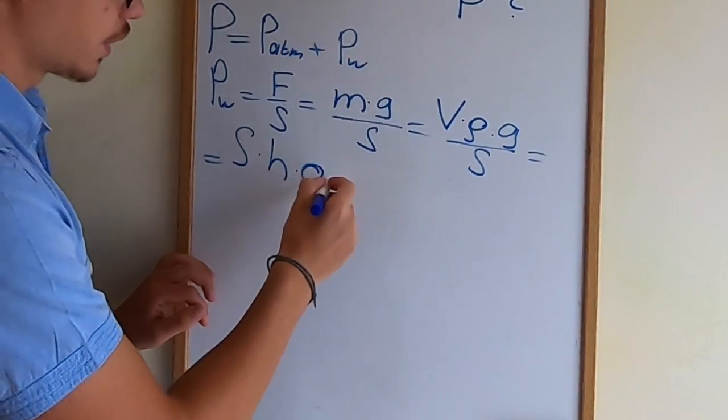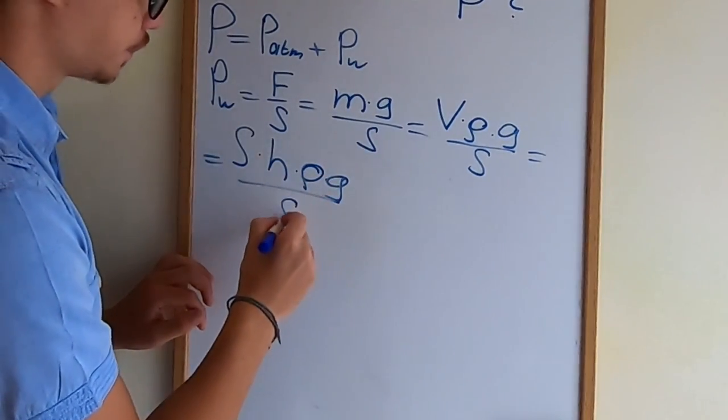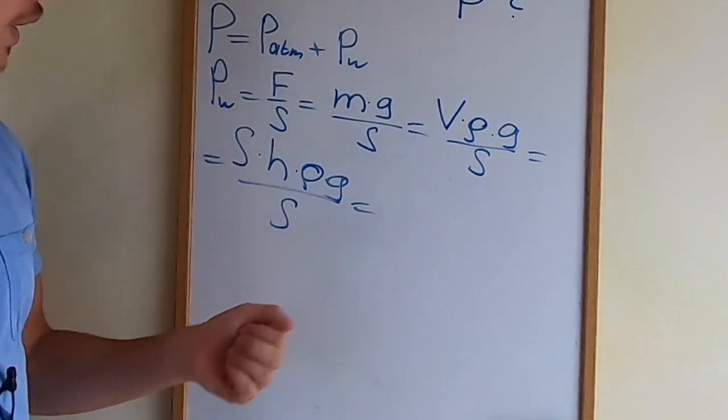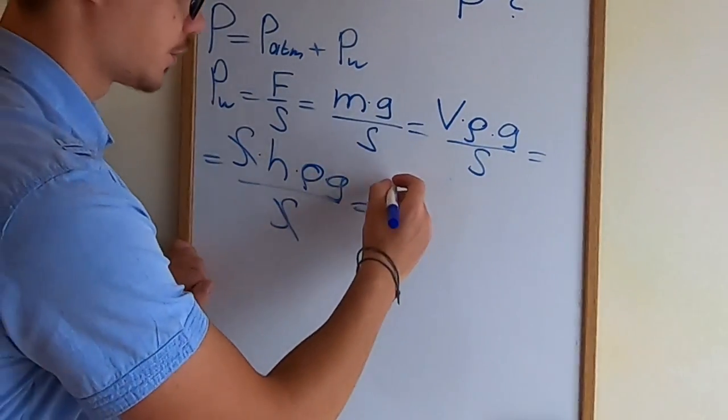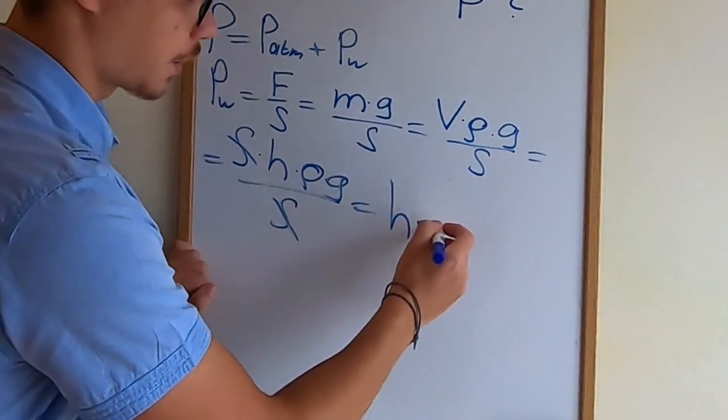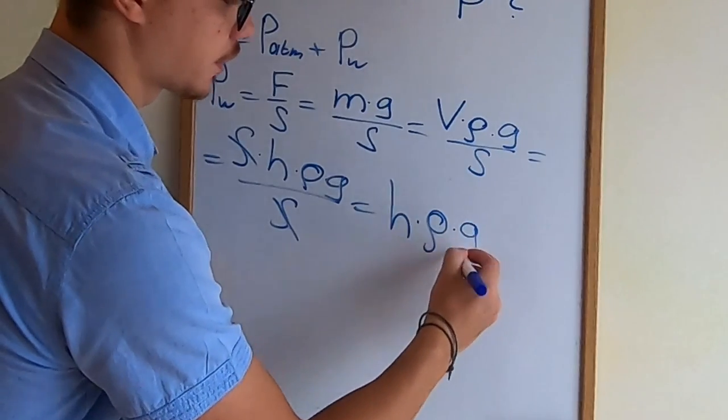So the volume will be just the area times height and the other terms that we have. And finally the areas cancel out, and we get a pretty well-known formula which is just the depth of the water times its density times the acceleration.